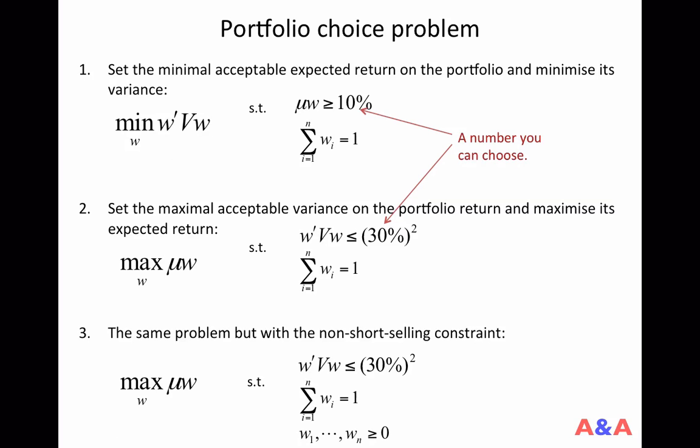So one type of portfolio optimization problem tries to minimize the risk, setting the minimal acceptable expected return on the portfolio. So this is the formulation. Choose the portfolio weights to minimize the risk of the portfolio, subject to the expected return of the portfolio being no smaller than 10%, and the weights summing up to 1.